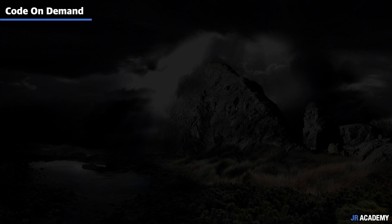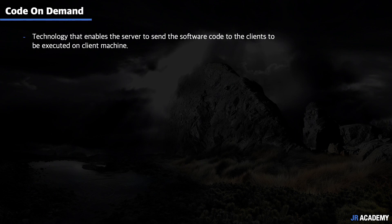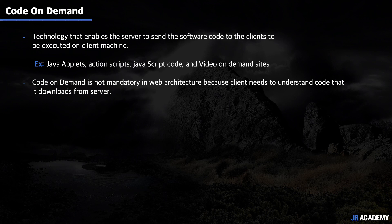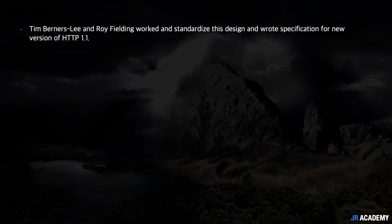The sixth constraint is code on demand. This is the technology that enables a server to send software code to the client to be executed on the client machine. Java applets, JavaScript, ActionScript, and video-on-demand sites are good examples of code on demand. This constraint is not mandatory in web architecture because clients need to be able to understand the code that is downloaded from the server.